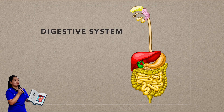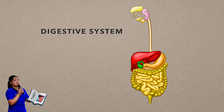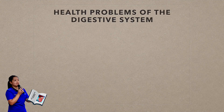The digestive system diseases are any of the diseases that affect the human digestive tract. Such disorders may affect the esophagus, stomach, small intestine, large intestine, pancreas, or the liver. Many disorders of the digestive system can be prevented by a diet low in fats and high in fruits and vegetables, limited alcohol consumption, and periodic medical examinations.